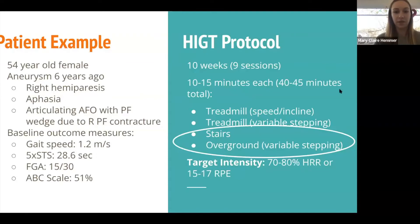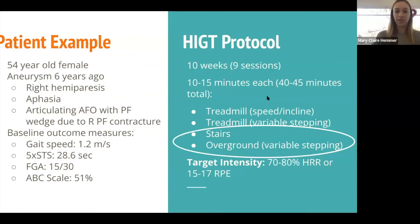We aimed to spend 40 to 45 minutes doing high-intensity gait training. On the treadmill, we would change the speed or incline, walk forward, and also do variable stepping — side-stepping, backward-stepping, stepping over obstacles — all different things while she was in the harness to challenge her lateral stability. We also did the stairs, and overground we did a lot of variable stepping and multi-directional obstacles. For target intensity, we were aiming for 70 to 80 percent of her heart rate reserve, or 15 to 17 on the RPE scale.